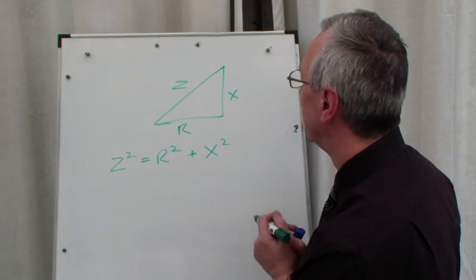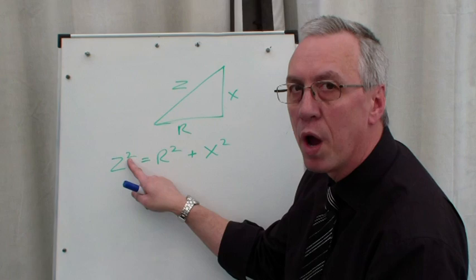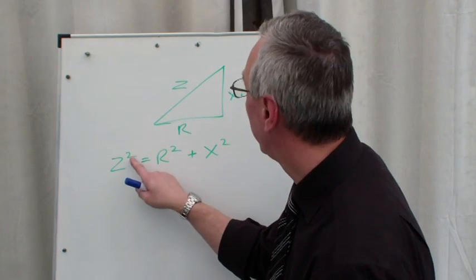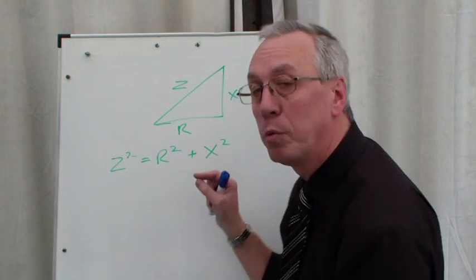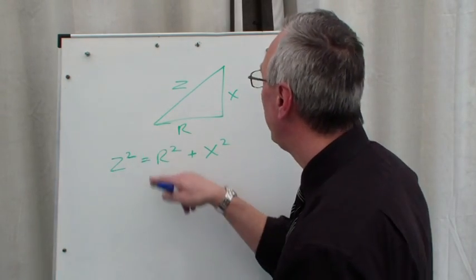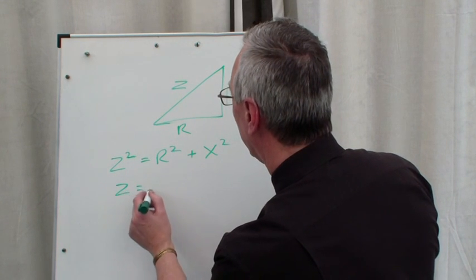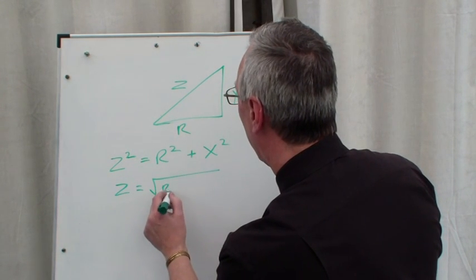To get z on its own, we need to get rid of the squared. From what we've just been looking at, we can move that across the equal sign and it will become a square root. It's just the same as square rooting both sides of the equation. z = √(r² + x²).